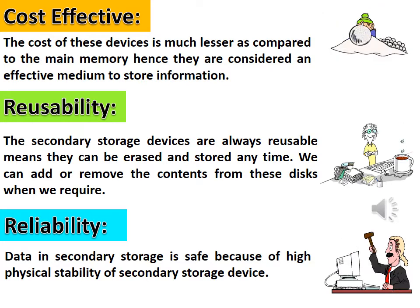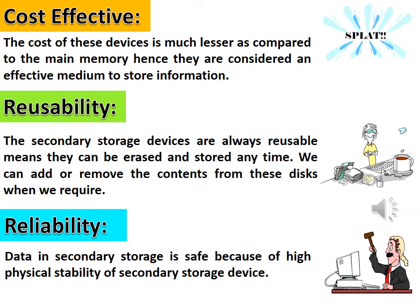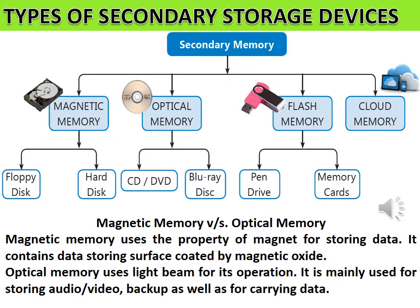Fifth advantage is reliability — data in secondary storage is safe because of the high physical stability of secondary storage devices. The various types of secondary storage devices include magnetic memory, optical memory, flash memory and cloud memory. In magnetic memory, we have floppy disk and hard disk. In optical memory, we have CD, DVD and Blu-ray disk. In flash memory, we have pen drive and memory cards.